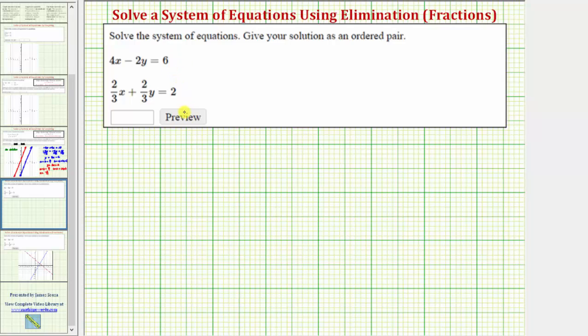We want to solve the given system of linear equations, and there are several ways to solve a system of equations. We can solve a system by graphing, substitution, or elimination, sometimes called the addition method. In this example, we will be using the elimination or addition method.